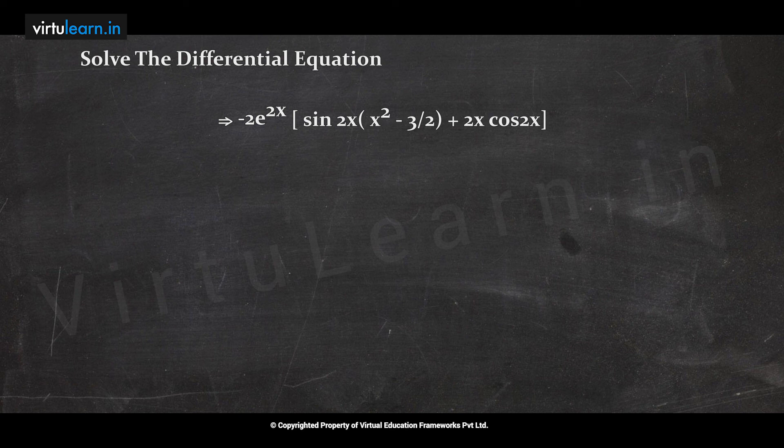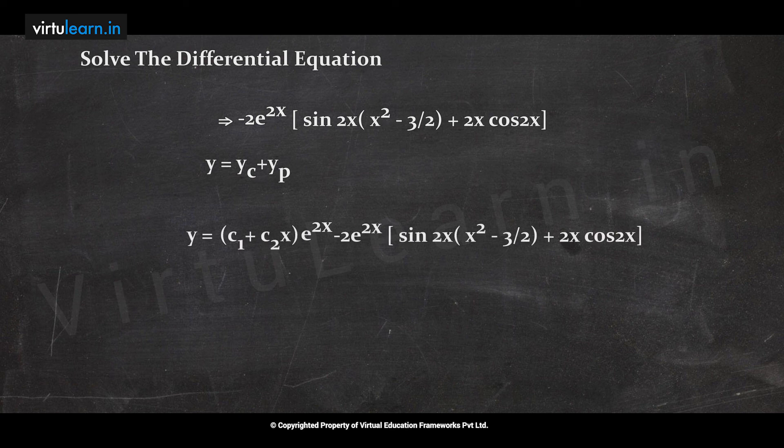The imaginary part gives: yp = -2e^(2x)[sin(2x)·(x² - 3/2) + 2x·cos(2x)]. Therefore the general solution is y = yc + yp = (c₁ + c₂x)e^(2x) - 2e^(2x)[sin(2x)(x² - 3/2) + 2x·cos(2x)].